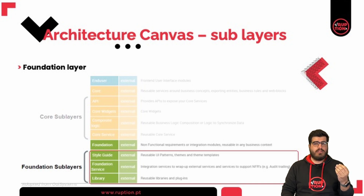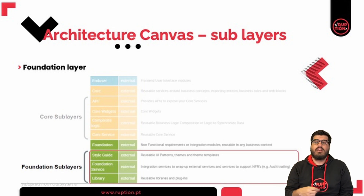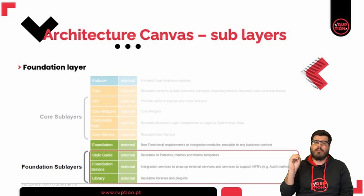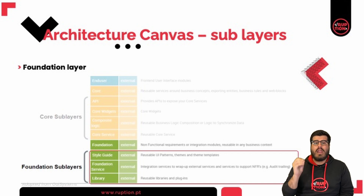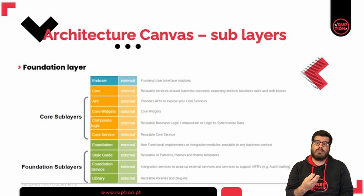The foundation layer has three sub layers: style guide, foundation service, and library. On the foundation layer, we have non-functional requirements — modules whose concepts are reusable in any business context. On the style guide, we have reusable UI patterns, themes, and theme templates. On the foundation service, we have integration services where we consume APIs as a first layer of abstraction. Last but not least, the library has reusable libraries and plugins. This canvas will help make our applications more scalable, allow for easier maintenance, promote reusability, and improve our application lifecycle.